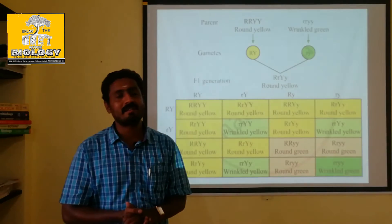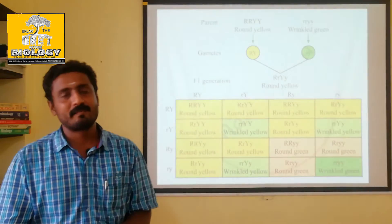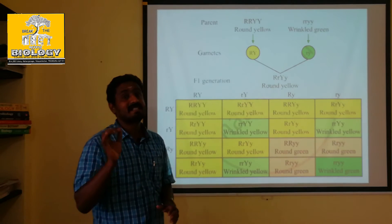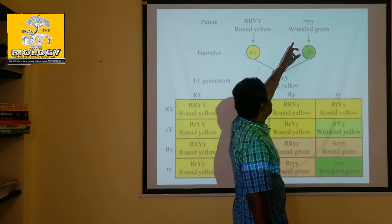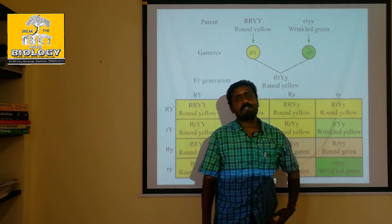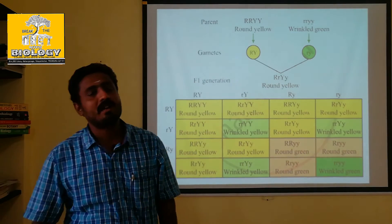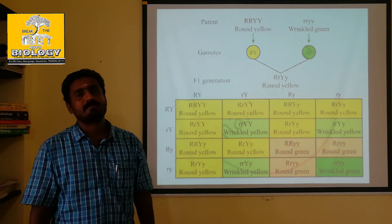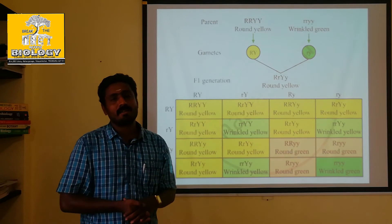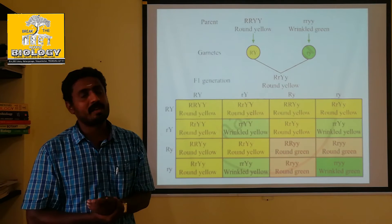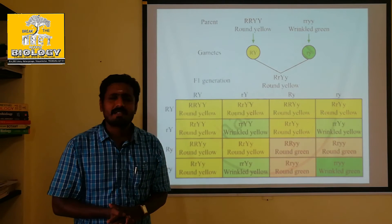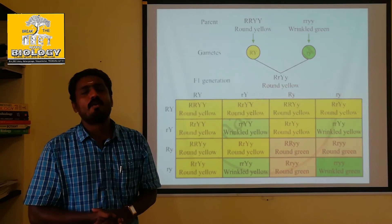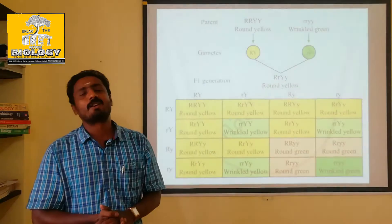This is a test cross. Test cross uses a homozygous recessive parent — small R, small R, small Y, small Y. If you choose an individual with capital R, capital Y — capital R, small R, capital Y, small Y — this is a test cross. The individual could be homozygous dominant or heterozygous dominant.